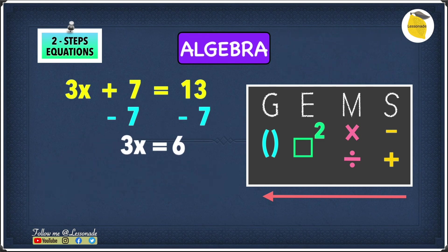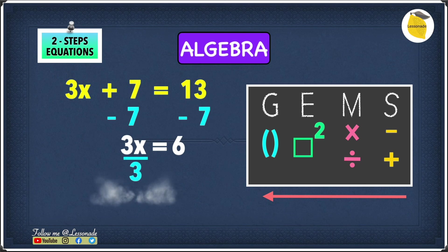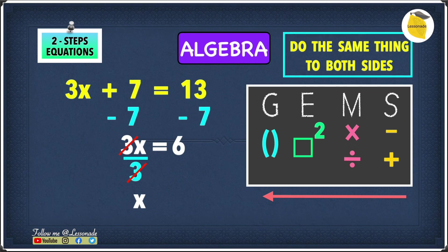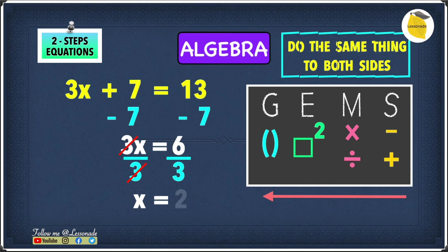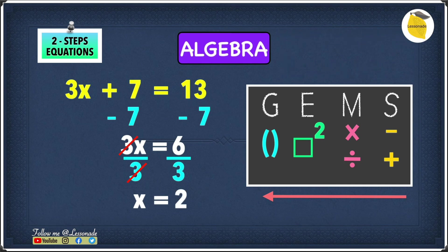13 minus 7 gives us 6, so now we have 3x equals 6. Next, we get rid of the 3 we're multiplying by x. To do that we divide by 3, because the 3 on top and the 3 on the bottom cancel each other out, leaving just x. We do the same to both sides: 6 divided by 3 equals 2. So our answer is x equals 2.